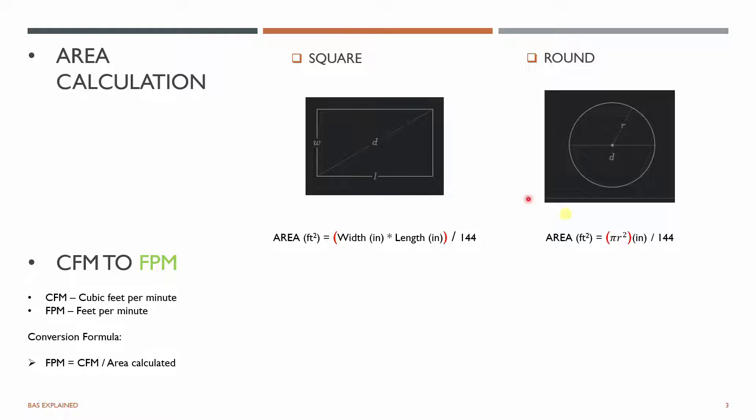Width into length divided by 144 gives you an area for a rectangular or square damper. And for a round damper you'll see pi r square, r representing the radius of that damper. You'll see the dimensions given in the drawing of diameter, you'll have to half it and then convert that to feet square which is again dividing by 144.